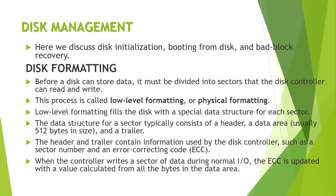Disk formatting is of two types: low-level formatting and physical formatting. In low-level formatting, we inject a data structure that will recognize any file content. Physical formatting means simply dividing the disk into several sectors. There are also error-correcting codes present in the data structure — this is low-level formatting.